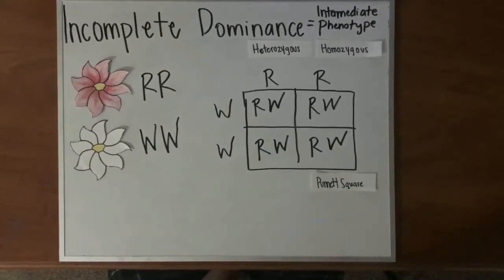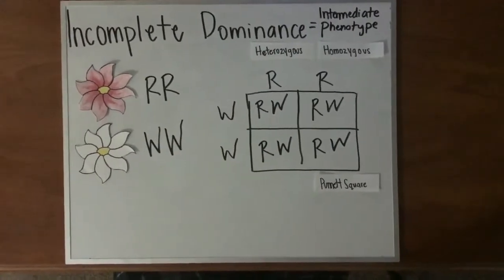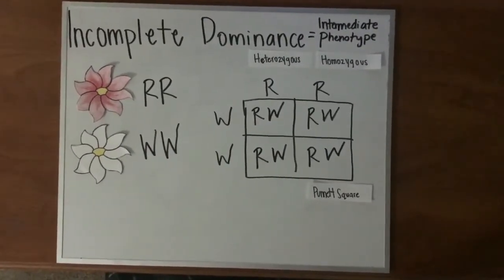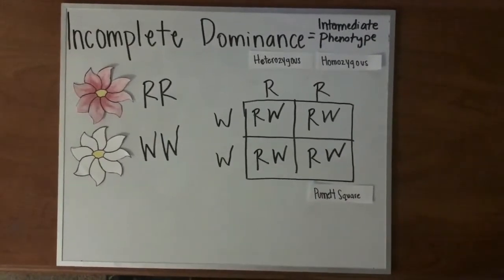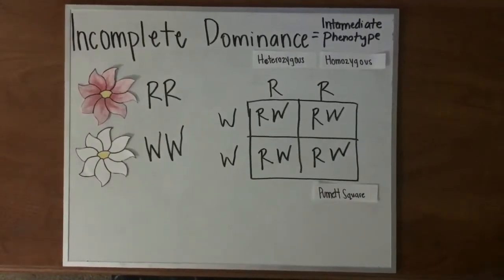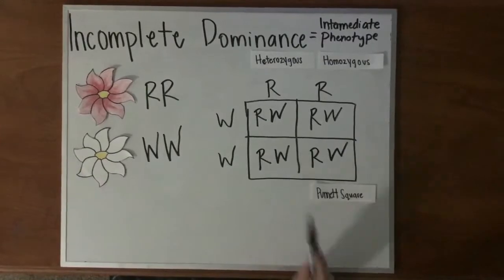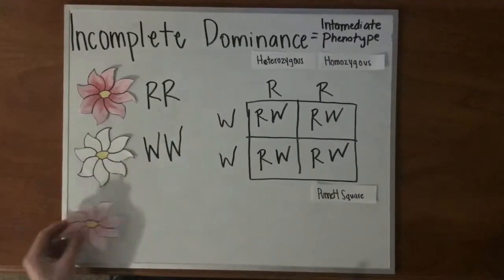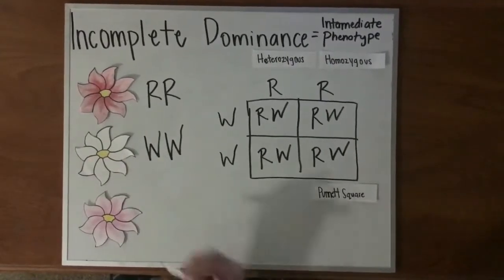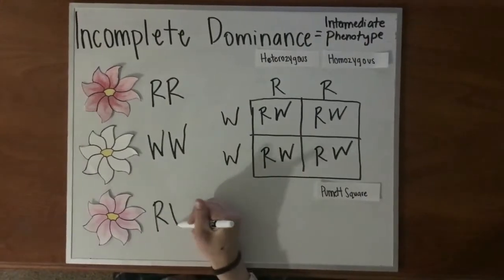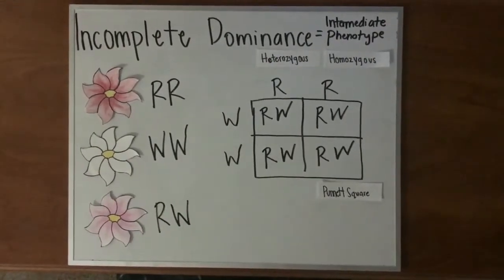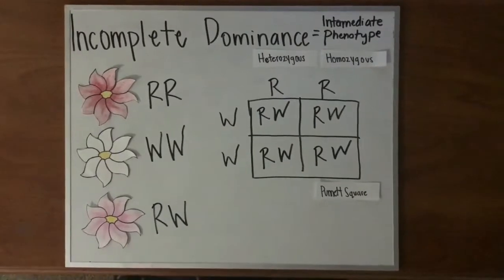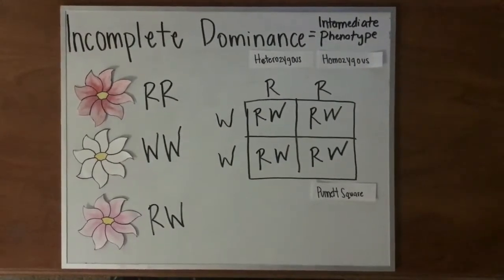As we can see from this cross, we get flowers that are all big R, big W. If we apply the principle of incomplete dominance, the flowers with the genotype big R, big W will be pink flowers, because pink is a mixture of red and white. Therefore, all of these flowers we cross will be pink because they are taking on the intermediate phenotype.